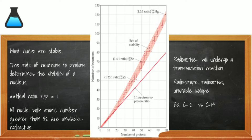Carbon-12 is the stable, non-radioactive version of carbon — it has six protons and six neutrons. Carbon-14 has eight neutrons and six protons. It is radioactive and is used in carbon dating, or to find the age of once-living things.